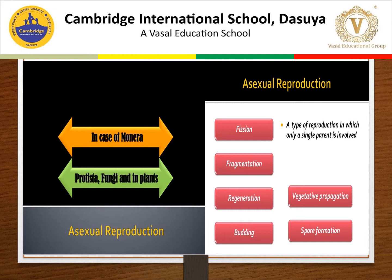Asexual reproduction is a type of reproduction which occurs without the formation and fusion of gametes. It does not involve special cells called sex cells or gametes. Only one parent is needed to produce a new organism. Asexual reproduction is uniparental, does not involve fusion of gametes, and is a method of rapid multiplication. Daughter organisms are genetically identical to the parents. The methods include fission, fragmentation, regeneration, budding, vegetative propagation, and spore formation.